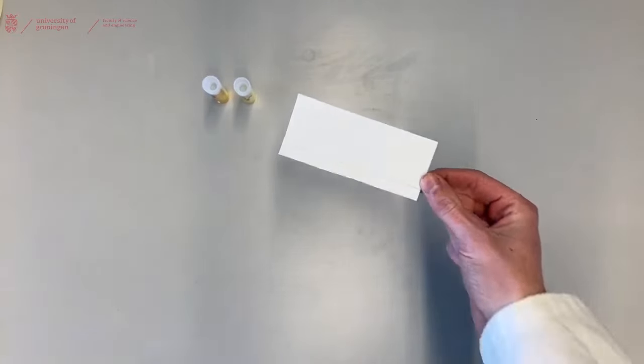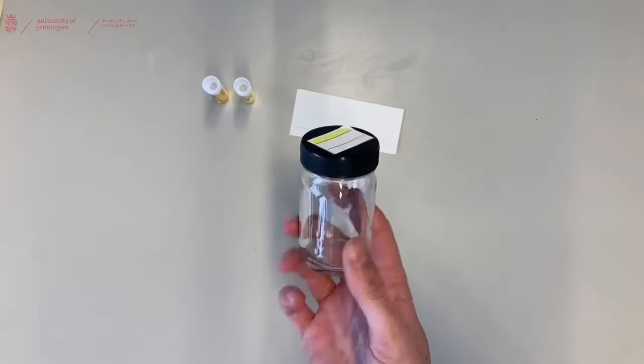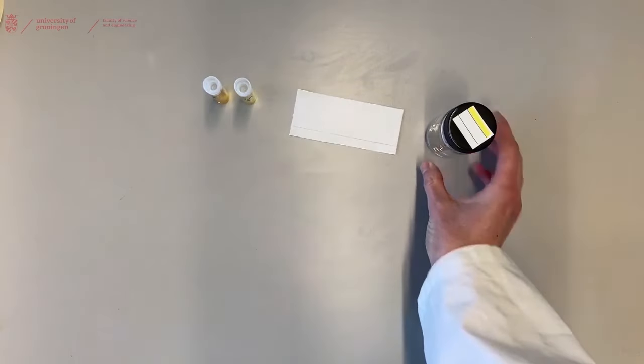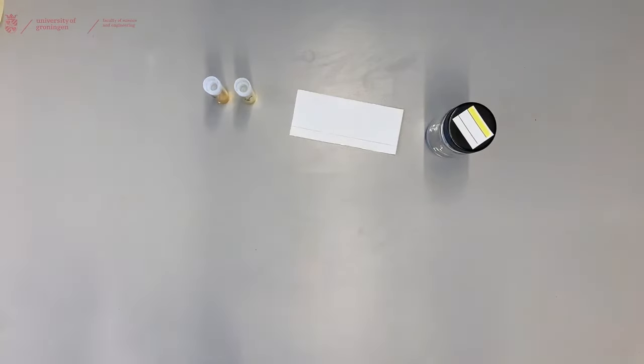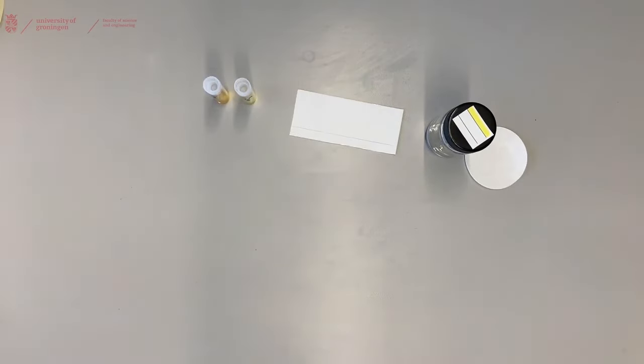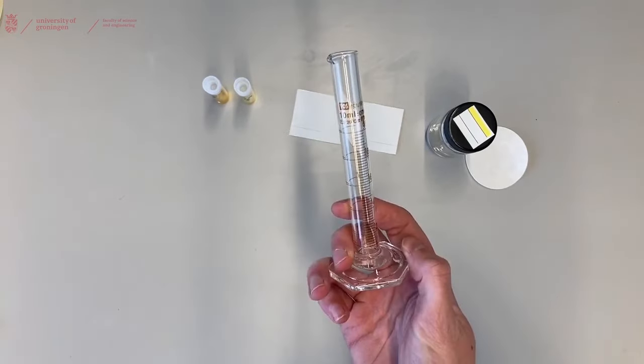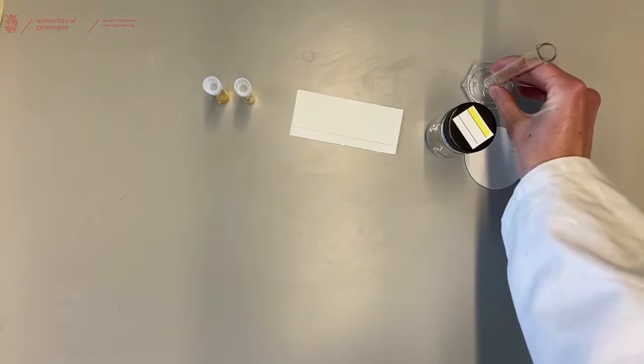You will need a TLC plate, a jar to run the TLC in, a piece of filter paper that fits in the jar, and a measurement cylinder to measure out your solvent that you are going to use for your TLC.